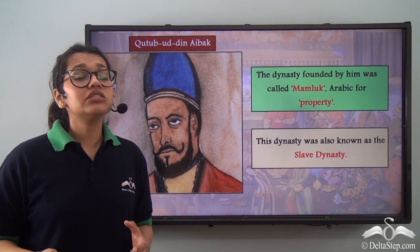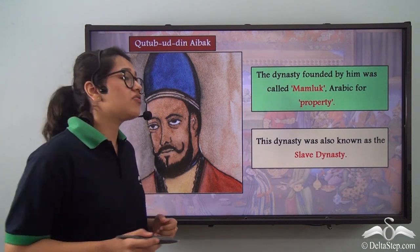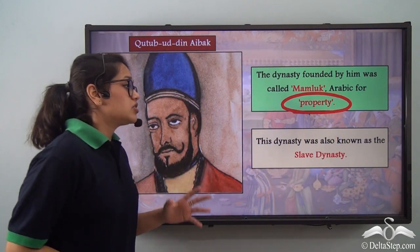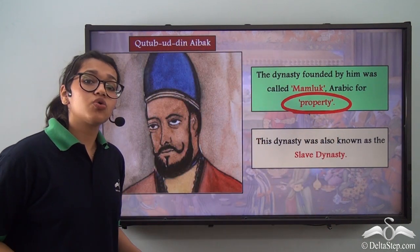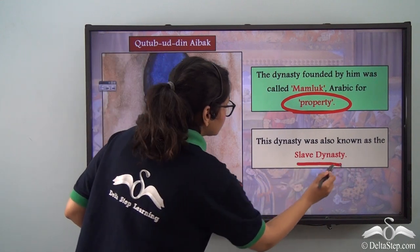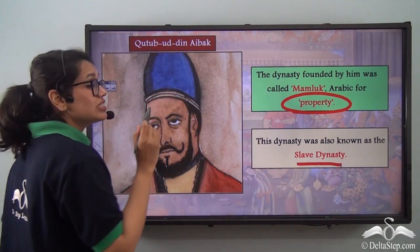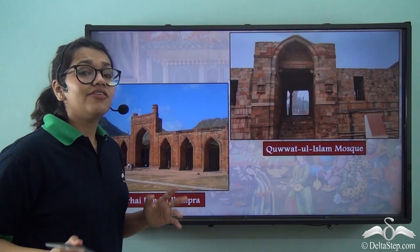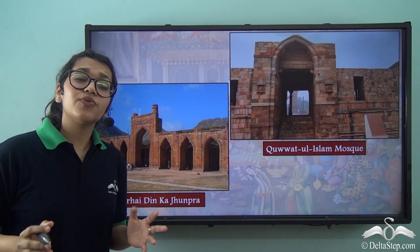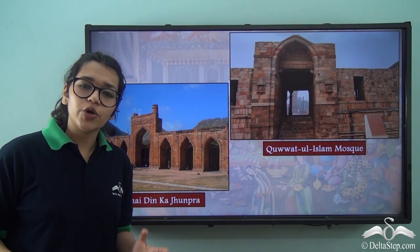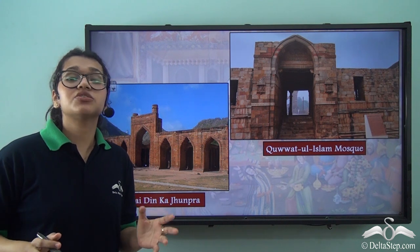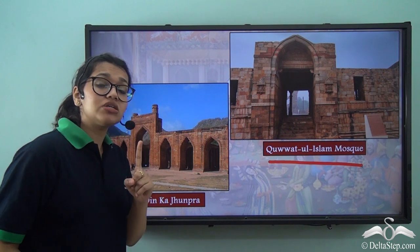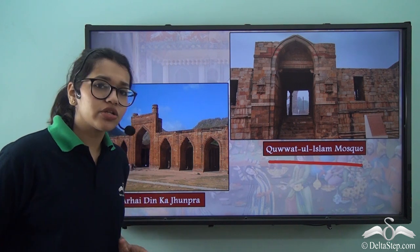The dynasty was called Mamluk because Mamluk is the Arabic word for property, and slaves were considered property back then. Qutubuddin Aibak also constructed various beautiful monuments that have survived the ravages of time, such as the Quwwat-ul-Islam Mosque, which was the first mosque in northern India.